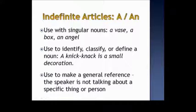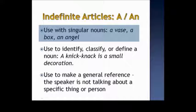Let's first talk about the indefinite articles A and AN. We use these articles with singular nouns, as in a vase, a box, an angel. Singular nouns are countable nouns. We can count vases, we can count boxes, we can count angels.